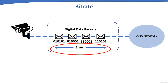Bitrate is the amount of data that is moved from one point to another in a given period of time. What moves in this case are bits, and the unit of time is seconds. In general, we measure bits traveling per second — i.e., bits per second.